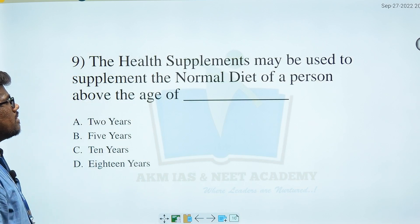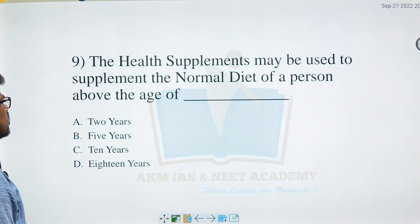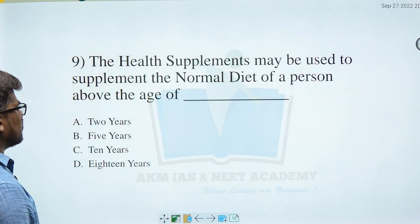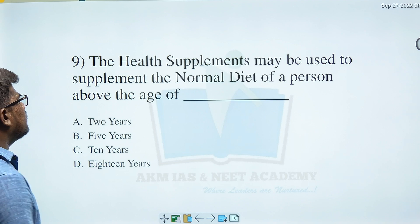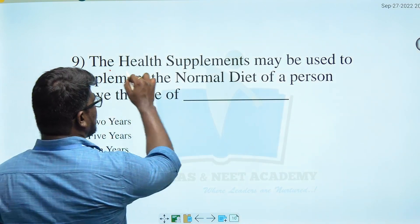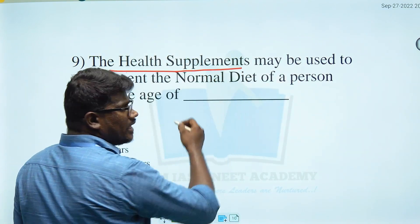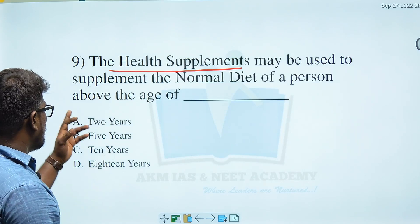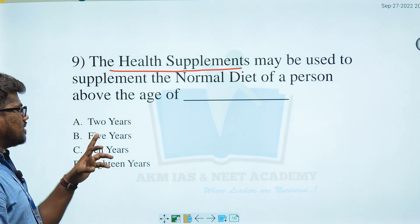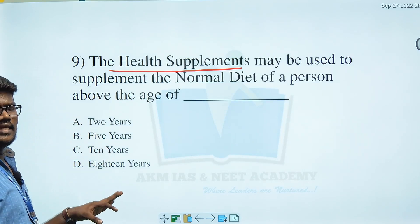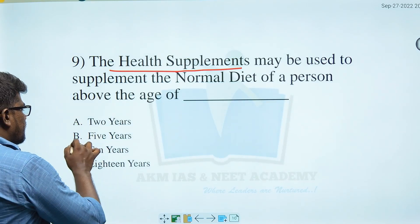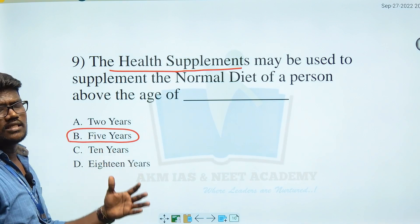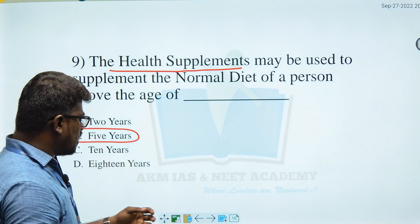The health supplements may be used to supplement the normal diet of a person above the age of — Options: A) 2 years, B) 5 years, C) 10 years, D) 18 years. The correct right answer is 5 years.